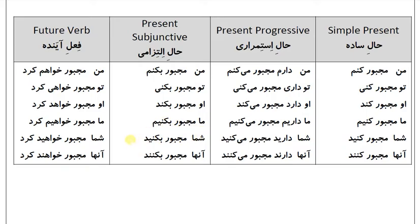فعل آینده (Future): من مجبور خواهم کرد، تو مجبور خواهی کرد، او مجبور خواهد کرد، ما مجبور خواهیم کرد، شما مجبور خواهید کرد، آنها مجبور خواهند کرد.